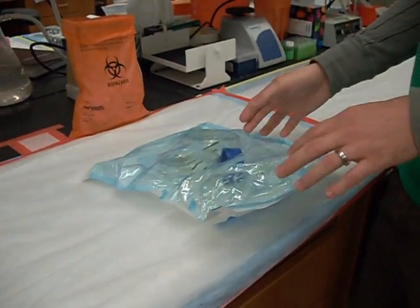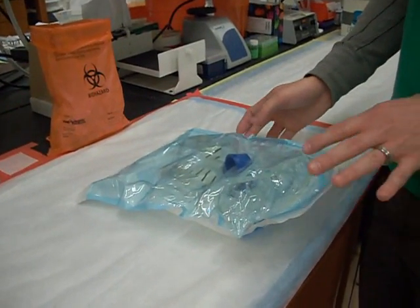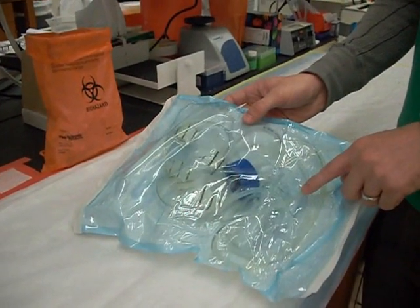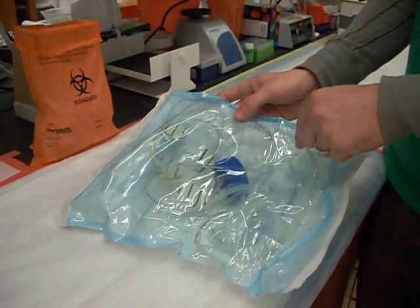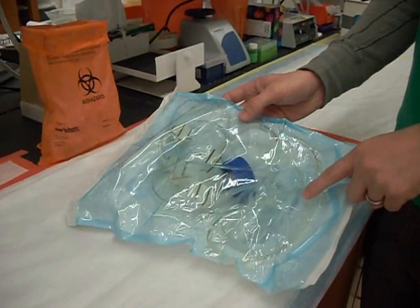One of the first things you need to have ready before you even start any flow experiment is you need to go ahead and have all your equipment sterilized. In this part we have the reservoir and tubing and some petri dishes autoclaved.